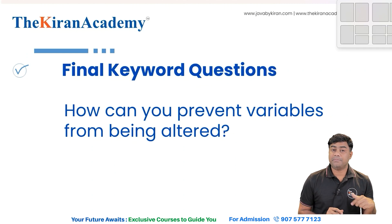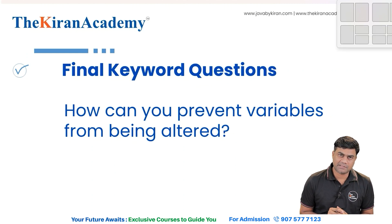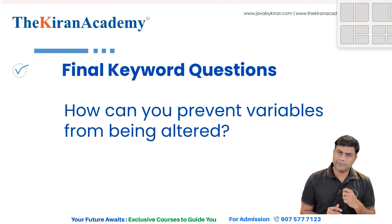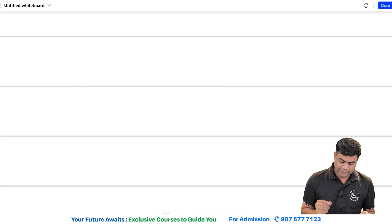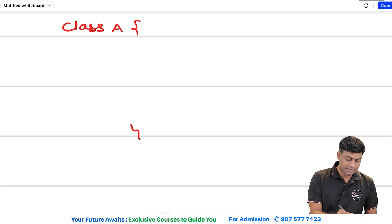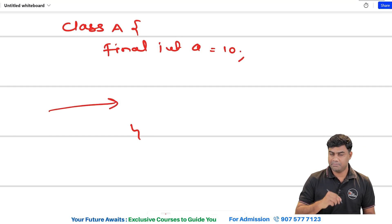How can you prevent variables from being altered? You can prevent a variable from being modified by making it final, so nobody can assign a new value to it. For example, if class A has a variable declared as `final int a = 10`, nobody can assign a new value to it.